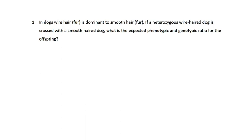There are four basic types or systems of inheritance: complete dominance, incomplete dominance, co-dominance, and sex-linked. We're going to go through a problem for each of those so you have an idea of how to approach the problem. We'll also talk a little bit about eye color because that one's tricky.